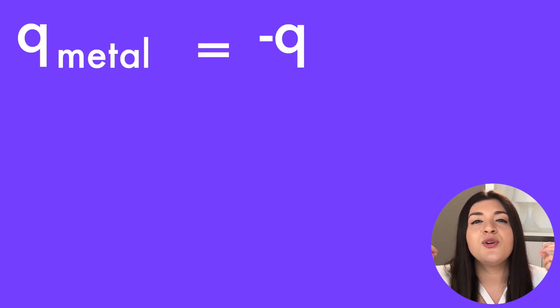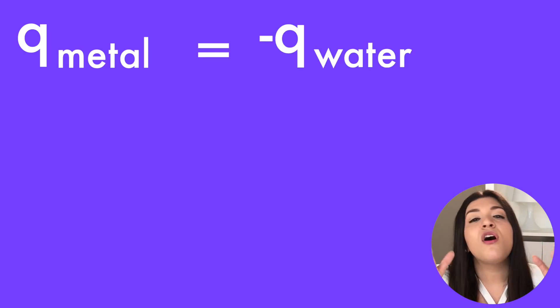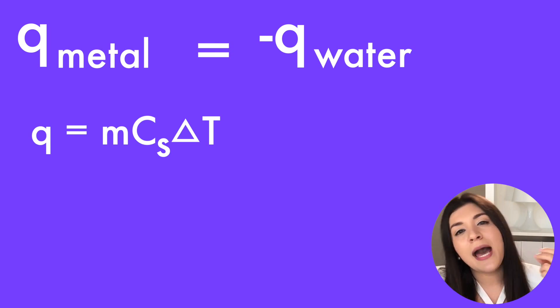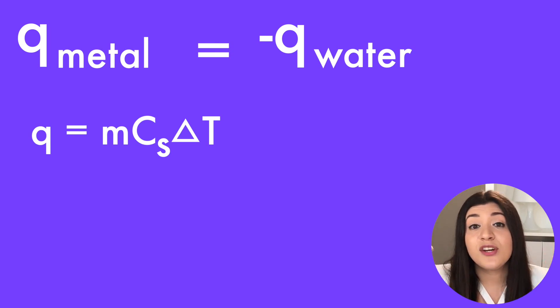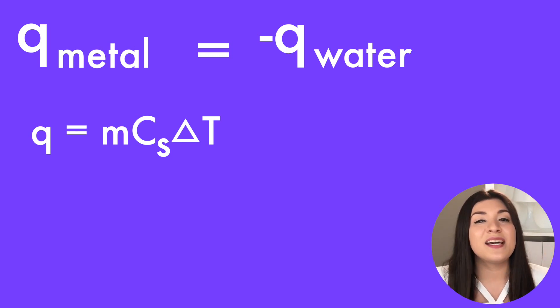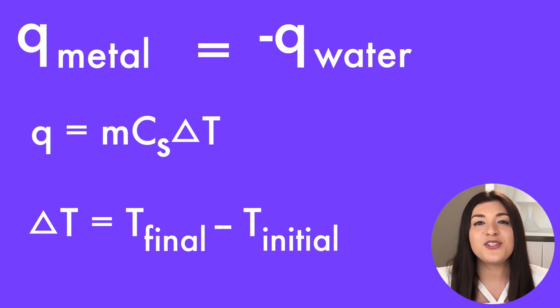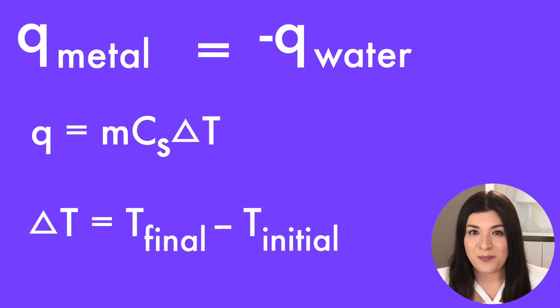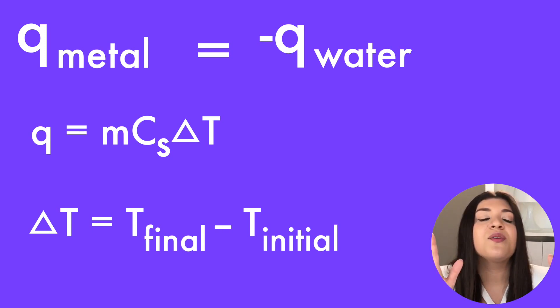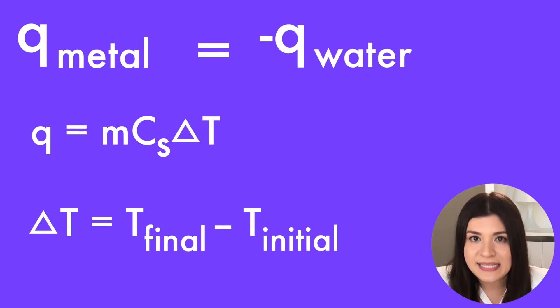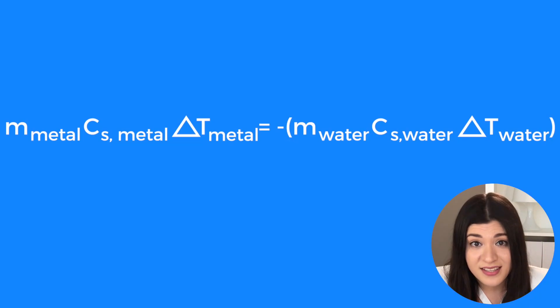So that leads to another formula where Q metal is equal to the negative Q of your water. Recall that Q is equal to mcΔT, where Q is your heat, equal to the mass times the specific heat capacity times your change in temperature. Your change in temperature is the final temperature minus your initial temperature.